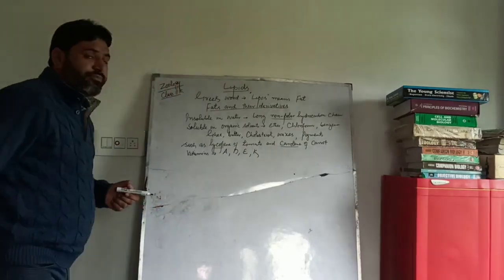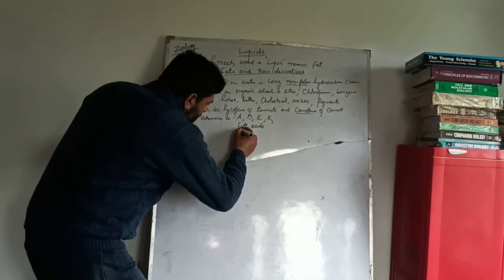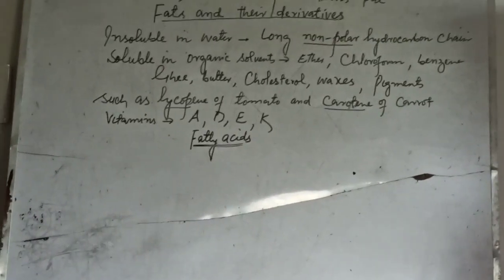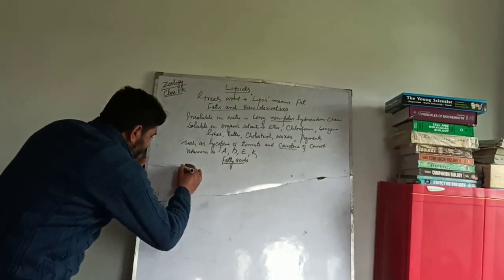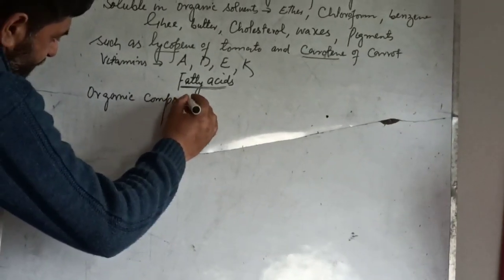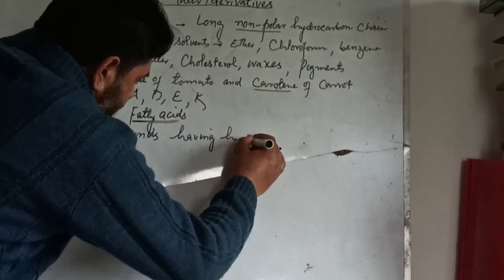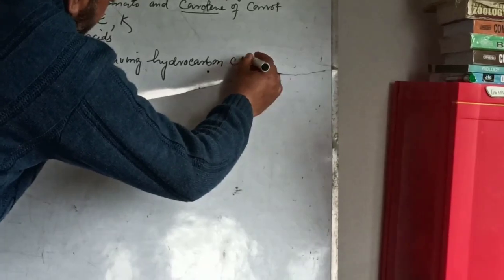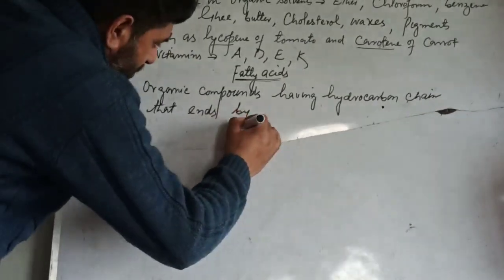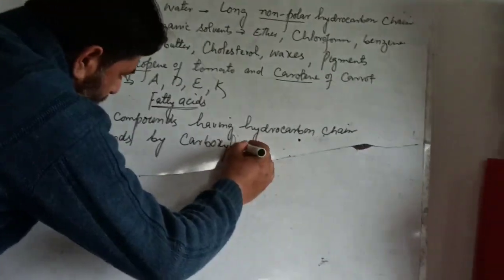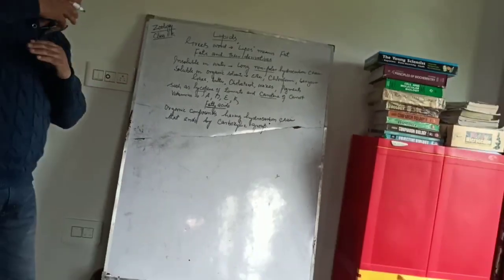Now these lipids - their basic structural unit - those are fatty acids. So lipids are mainly composed of fatty acids. What are these fatty acids? They are organic compounds having a hydrocarbon chain that ends with a carboxylic group. So a fatty acid is made up of a hydrocarbon chain, and at the end there is a carboxylic group.